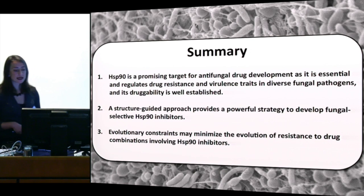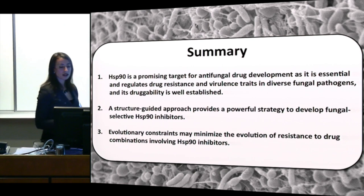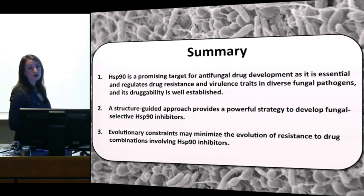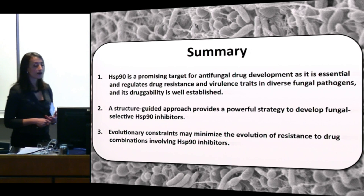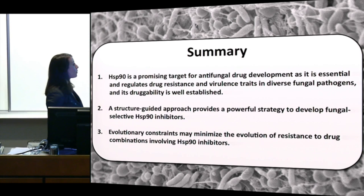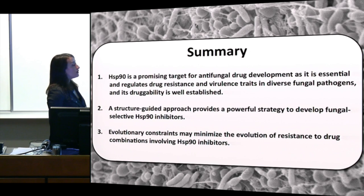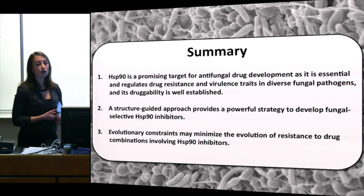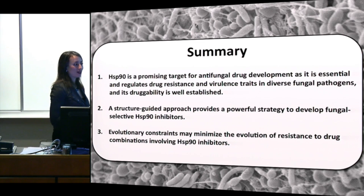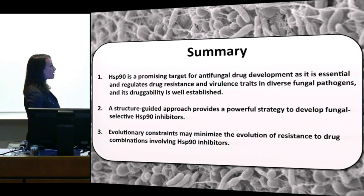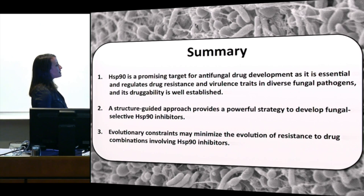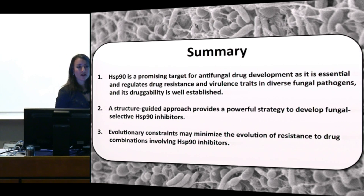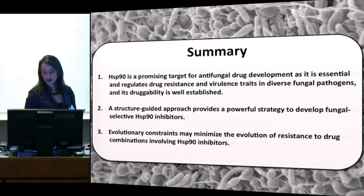In summary: Hsp90 is a promising target for antifungal drug development — essential in all eukaryotes, it regulates drug resistance and virulence traits in all fungi examined and also many protozoan parasites. A structure-guided approach provides a powerful strategy to develop fungal-selective inhibitors, and we're excited with progress from just seven compounds. Evolutionary constraints may also minimize the evolution of resistance to drug combinations involving Hsp90 inhibitors.